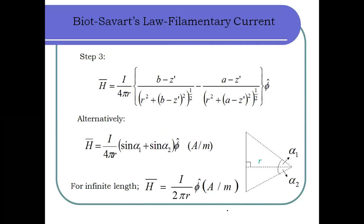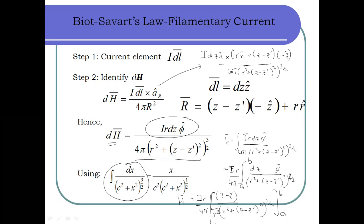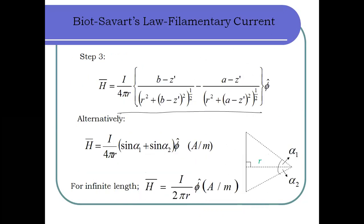After substituting the limits A and B, we obtain the H field equation. There was a correction: R² should be multiplied with the bracket √(R² + (Z − Z′)²) in the denominator. With the correct substitution, the final equation for H field intensity is obtained in the φ̂ direction, similar to what was done earlier for Coulomb's law.